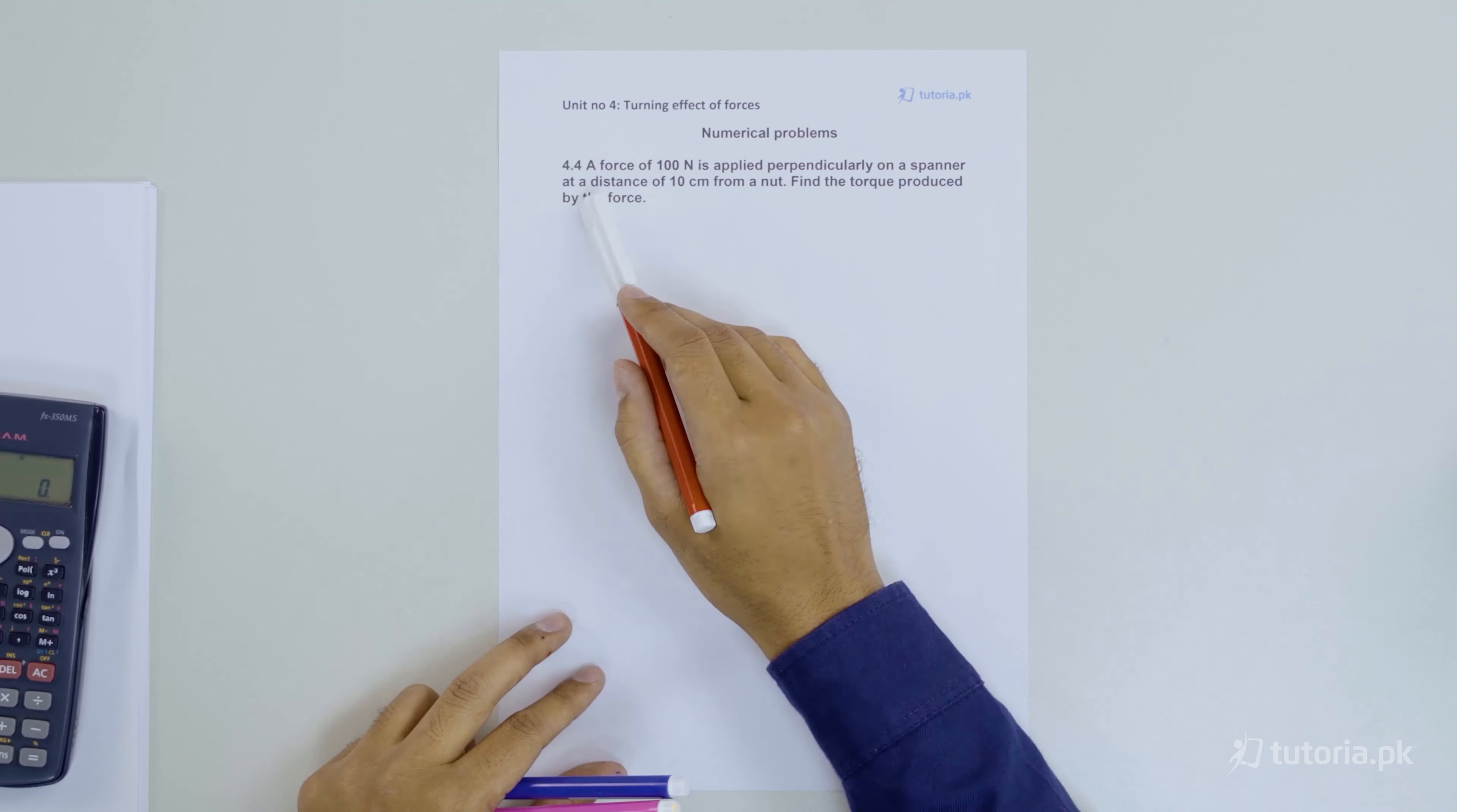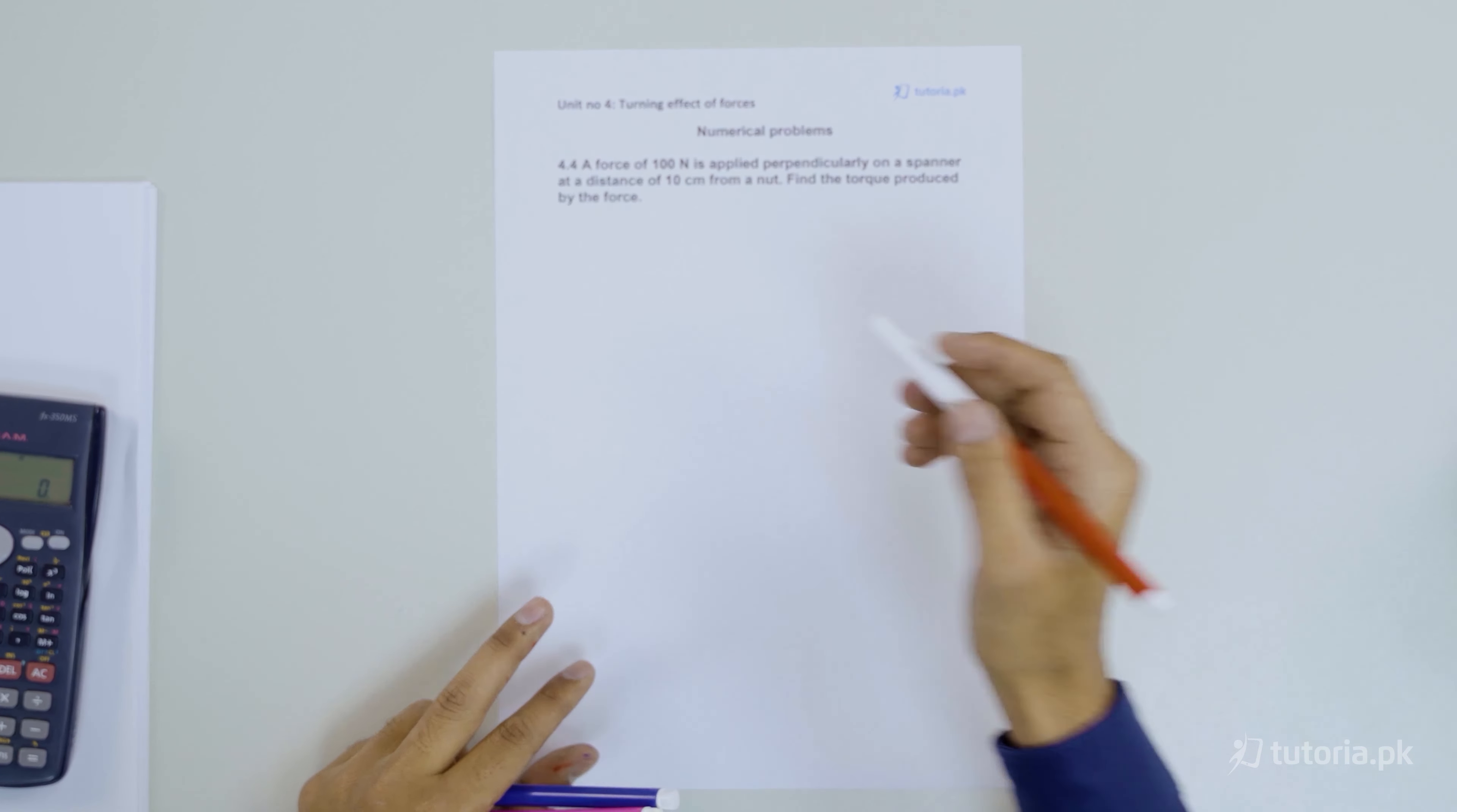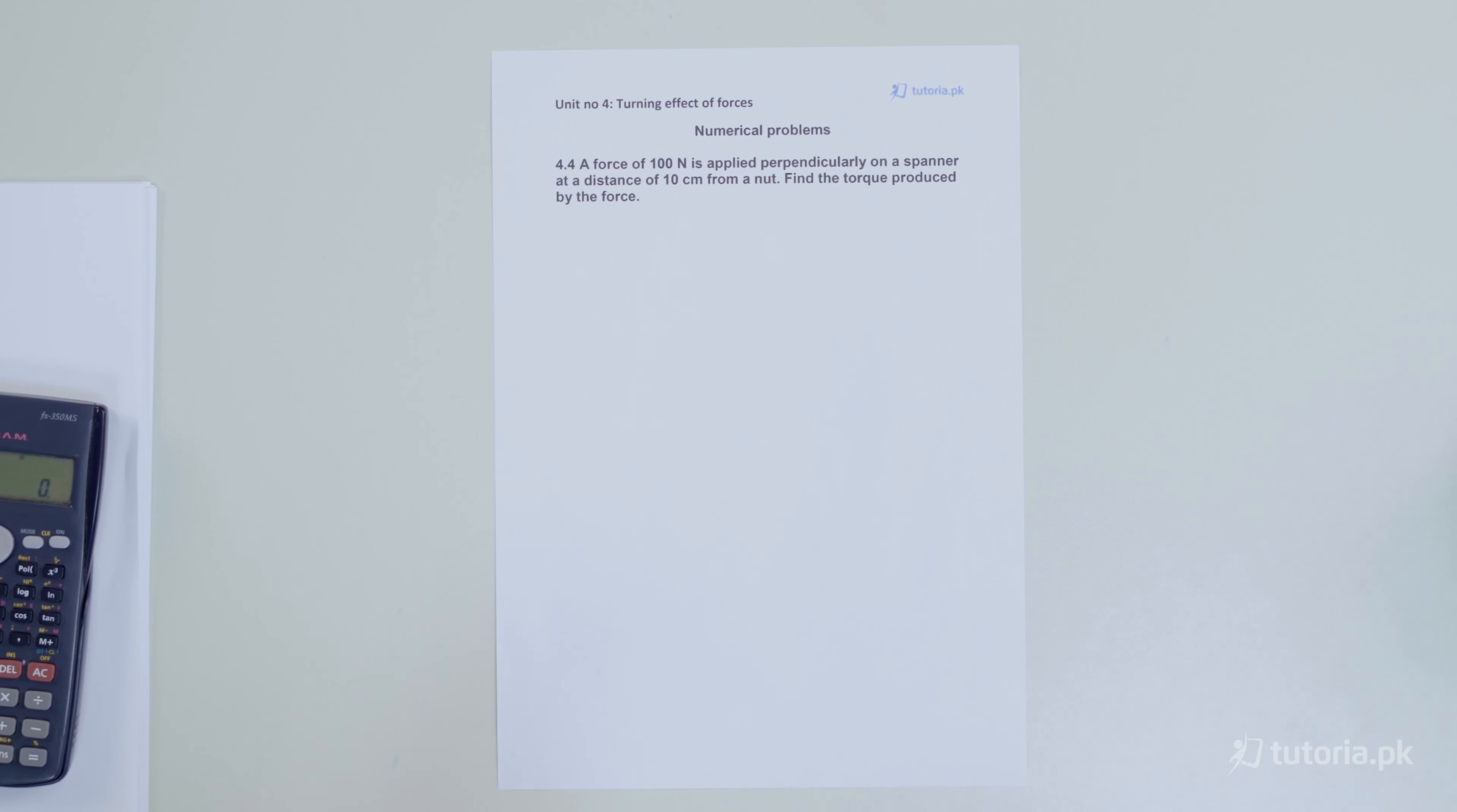Now let's see our next numerical 4.4. A force of 100 Newton is applied perpendicularly on a spanner at a distance of 10 cm from a nut. Find the torque produced by the force.